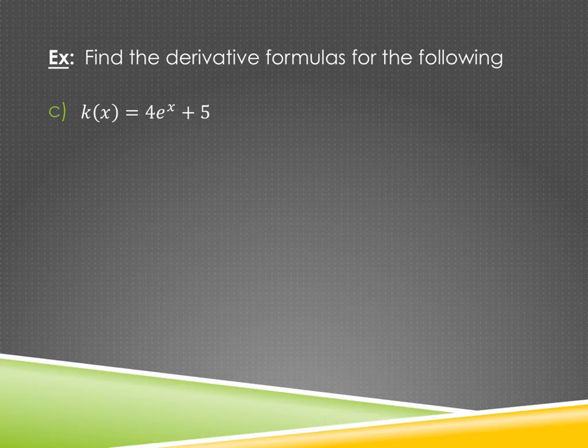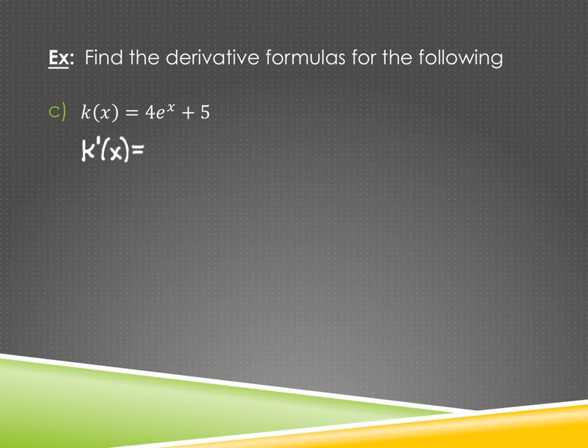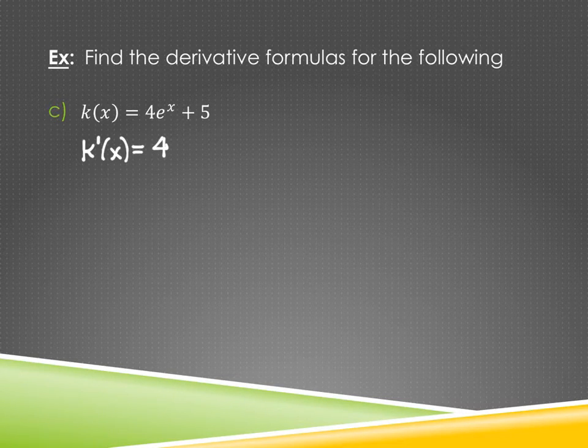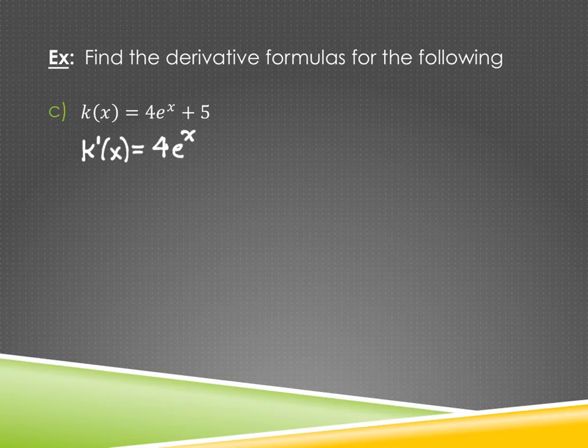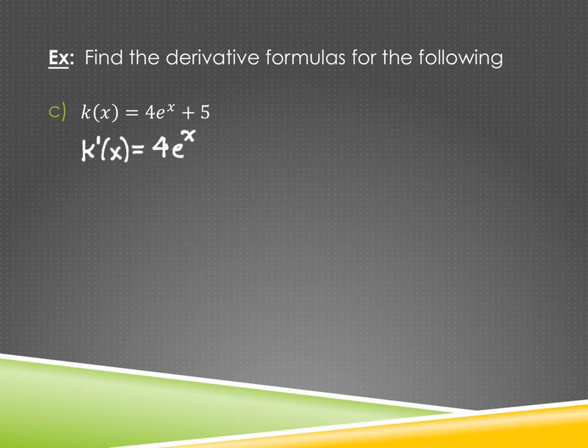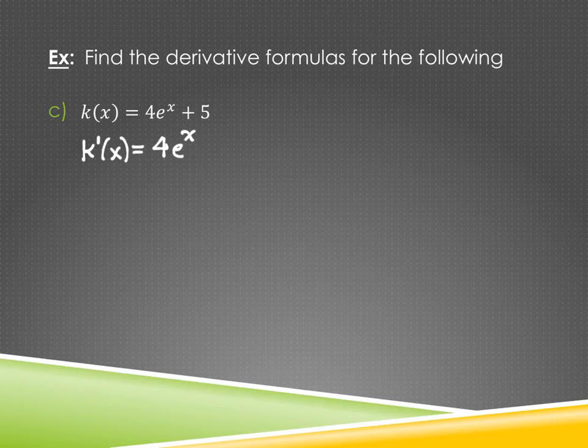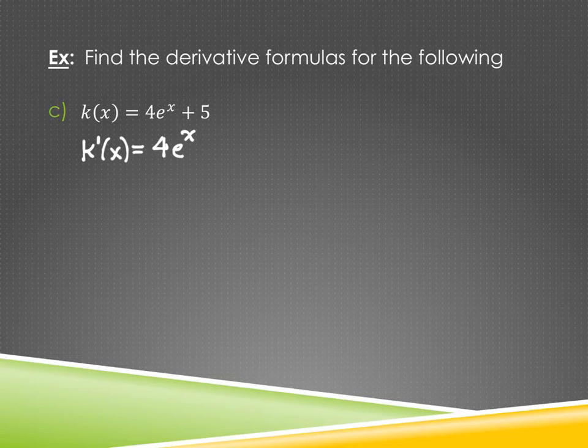How about c? Find the derivative for the following, same directions. k prime of x. The 4 is a constant multiplier. So I get to write him down. What's the derivative of e to the x? e to the x. So that's fantastic. And then I have plus 5. Plain old 5 by him, little lonesome self. Zero. He gets cut. Yes, he does. He goes away into oblivion, never to be seen again. All right? He's gone. This is the derivative. 4 e to the x.